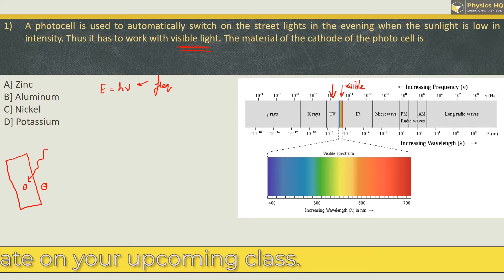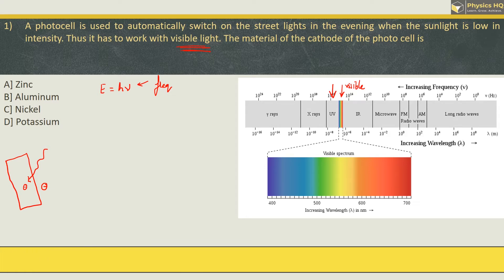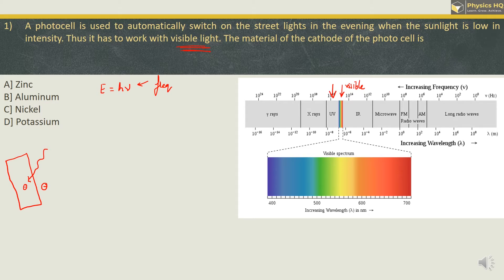But we are supposed to work with visible light, and visible light has a lower frequency when compared with ultraviolet. So we need to select a metal that can give out electrons easily even with lesser energy. So the correct option will be option D, which is Potassium.